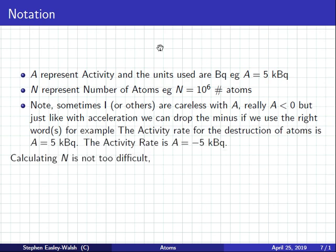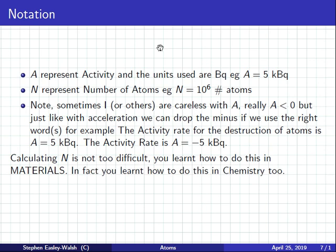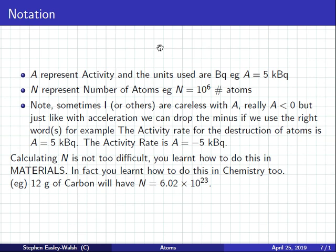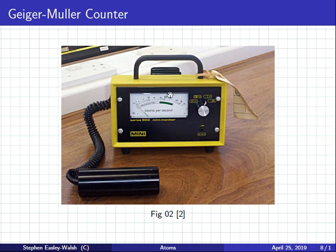So, calculating N is not too difficult. You learn how to do that in materials. PV equals NRT. You know this? So, 12 grams of carbon will have an N of 6 times 10 to 23. 12 grams is one mole. So, how can we measure radiation? How can we measure activity? We can measure activity using this guy. This is called a Geiger-Mueller counter.